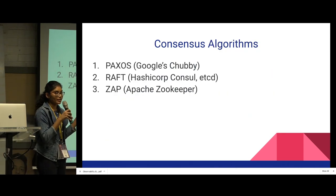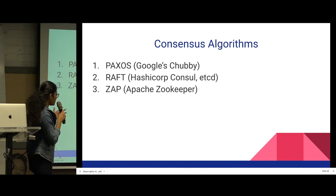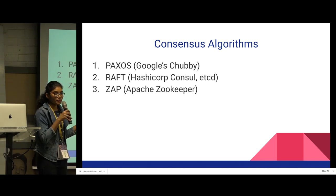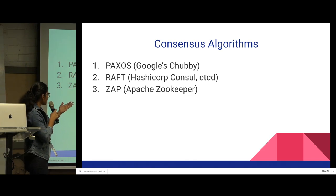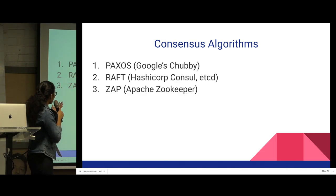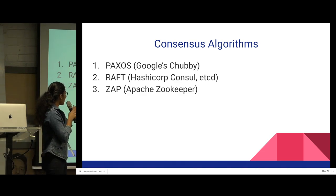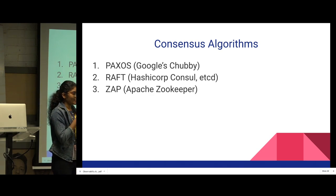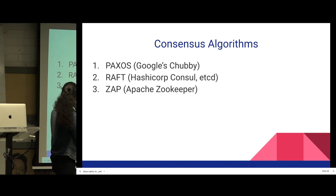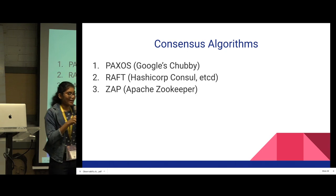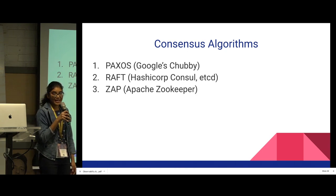Here are some prominent consensus algorithms: Paxos, Raft, and Zab. Various softwares already implement these algorithms — Google Chubby implements some variant of Paxos, Consul and etcd implement Raft, and Apache Zookeeper implements Zab. So if you are designing a distributed system, you can leverage all these existing softwares to obtain consensus and solve the said problems in your distributed system. I hope this talk was helpful. Thank you.